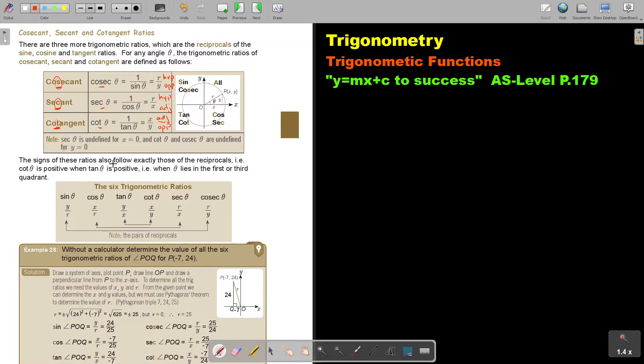The size of these ratios also follow exactly those of the reciprocals. For example, cot is positive when tan is positive. When theta lies in the first or the third quadrant, meaning it's referring to the CAST diagram. That means sin is positive here, as well as cosec. Remember? Third one. As well as cot. Third one. As well as sec. Third one. So, this two. It follows the same rules.